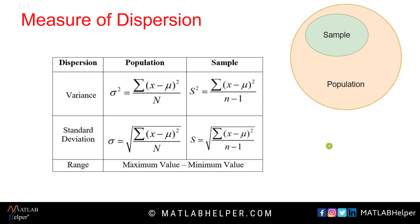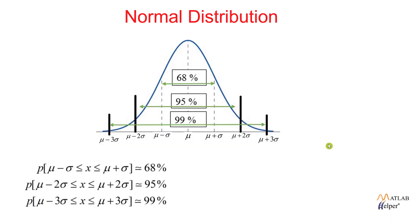Most data follows a Gaussian or normal distribution — a bell-shaped curve with certain properties called the empirical formula. The first formula specifies that the probability of a variable falling within the range of mu minus sigma to mu plus sigma covers approximately 68% of data points. The second formula covers the range mu minus 2 sigma to mu plus 2 sigma, approximately 95% of data points. The third covers mu minus 3 sigma to mu plus 3 sigma, approximately 99% of data points.